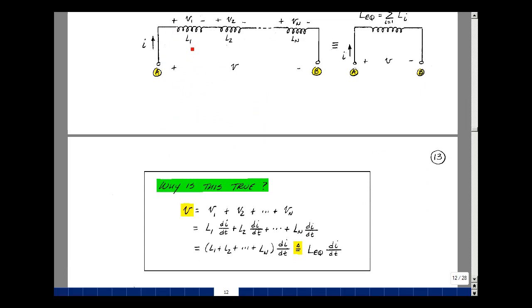The current flowing through these elements will cause a voltage drop across each inductance, called as voltage V1 for L1, V2 for L2, all the way through V sub N for L sub N. Rise in voltage would equal the drops around the loop. That's this equation right here. From our definition of an inductance, the voltage across an inductance is L di dt.